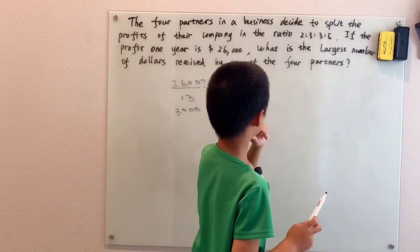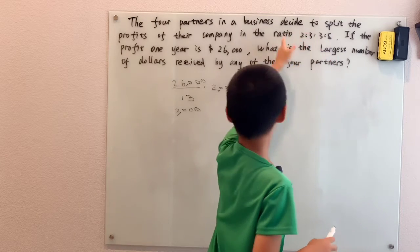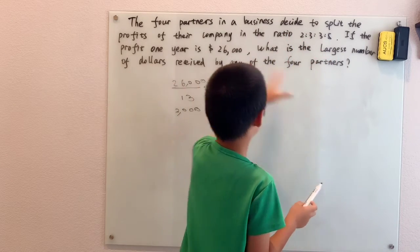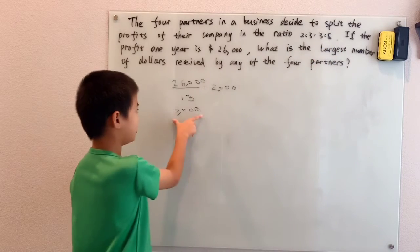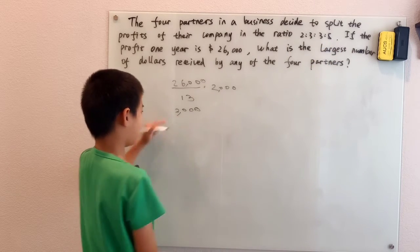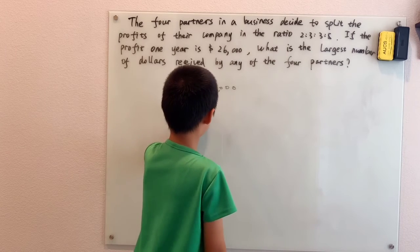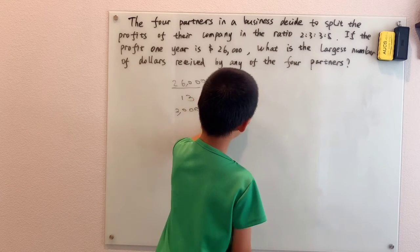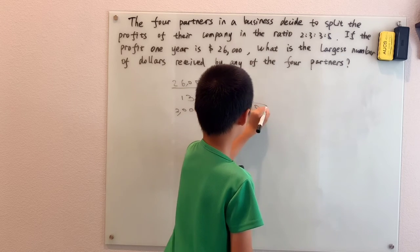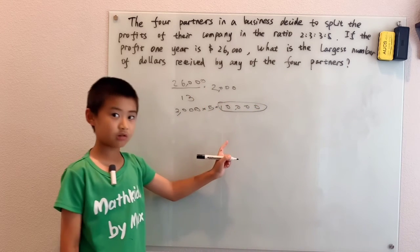The largest amount of dollars received by any of the 4 partners - that's the 5 parts. So if each one of those parts is $2,000, you just multiply by 5 and get $10,000 total.